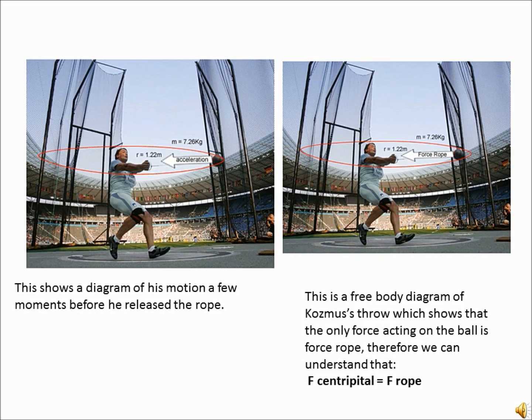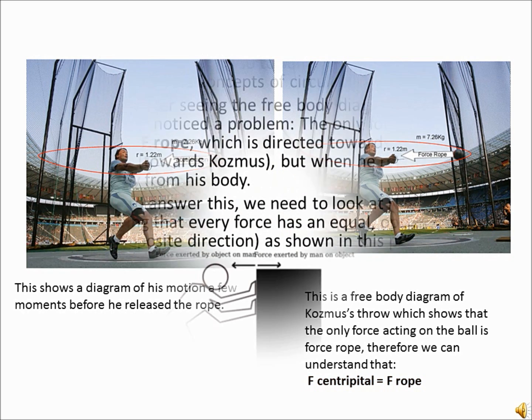This shows the forces acting on the ball as it is about to be released by Kozmus, which indicates the only force acting on the ball is the force tension in the rope. And since centripetal force is actually a net force, we can say that force tension in the rope is actually equal to the force centripetal.